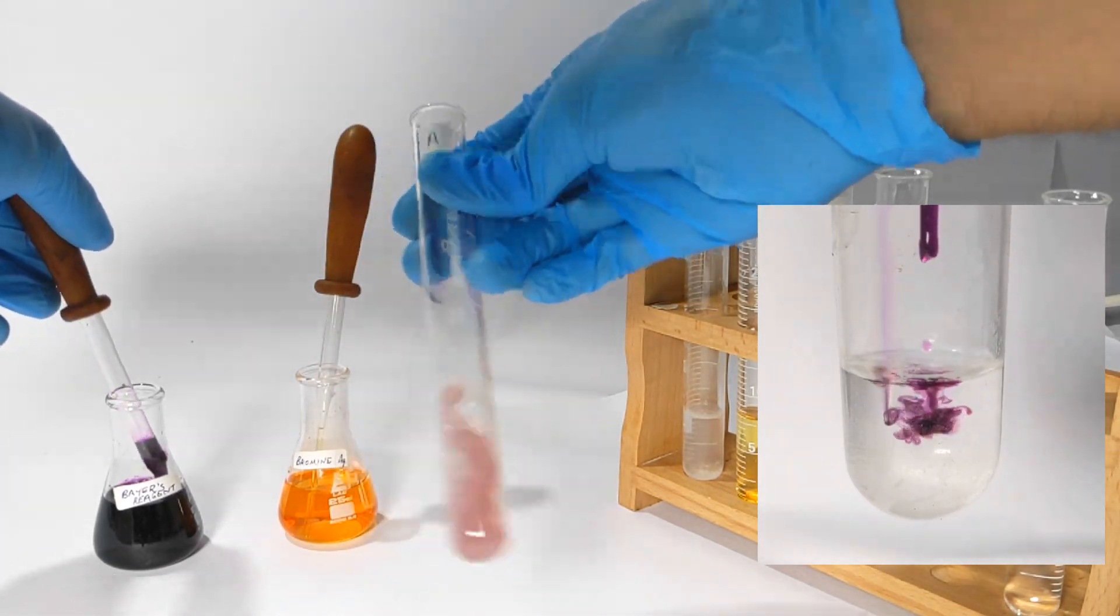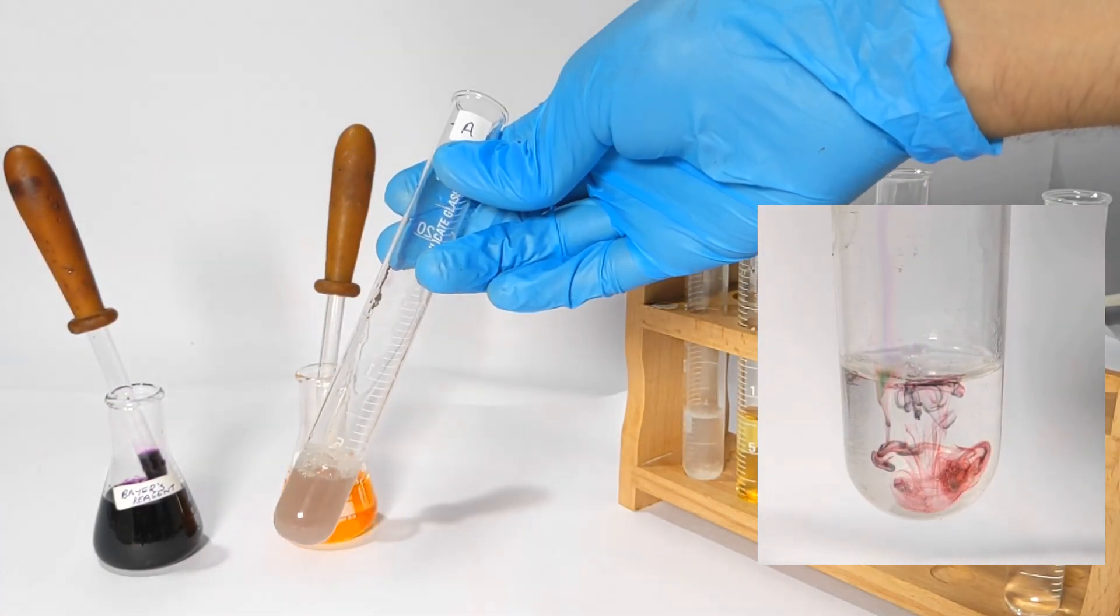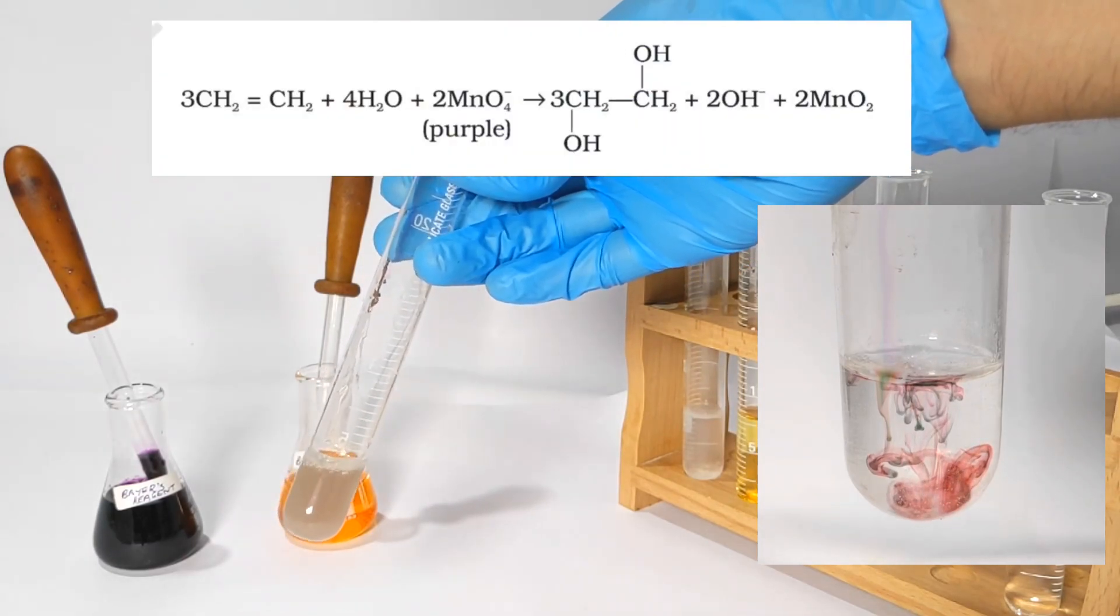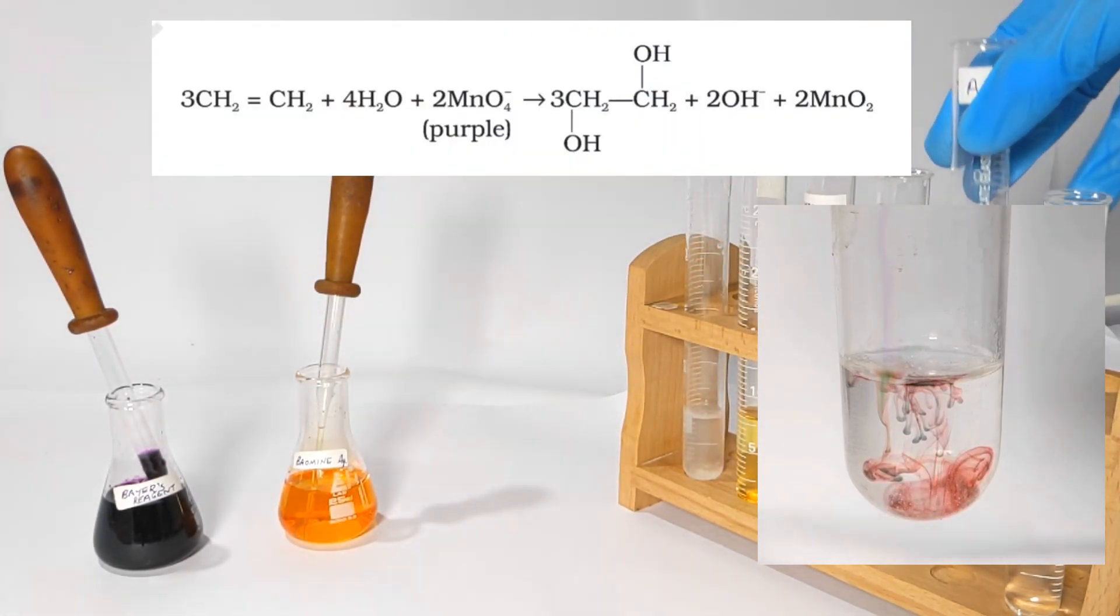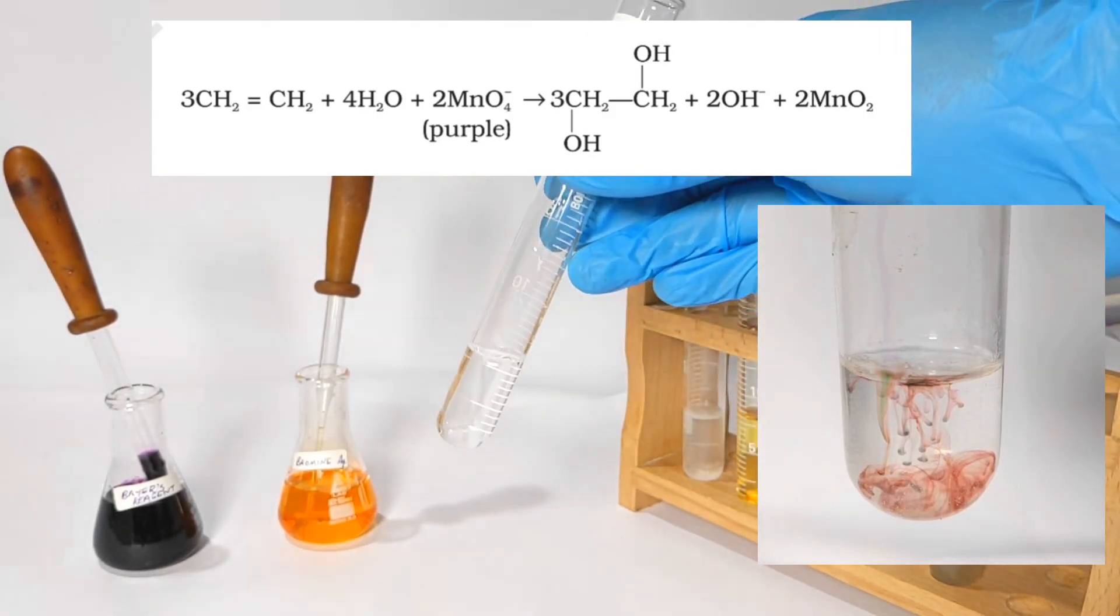This indicates a positive test as the unsaturated organic compound got converted to vicinal glycol and the permanganate reduced itself to manganese dioxide which being insoluble in water stays as a turbid brown precipitate.